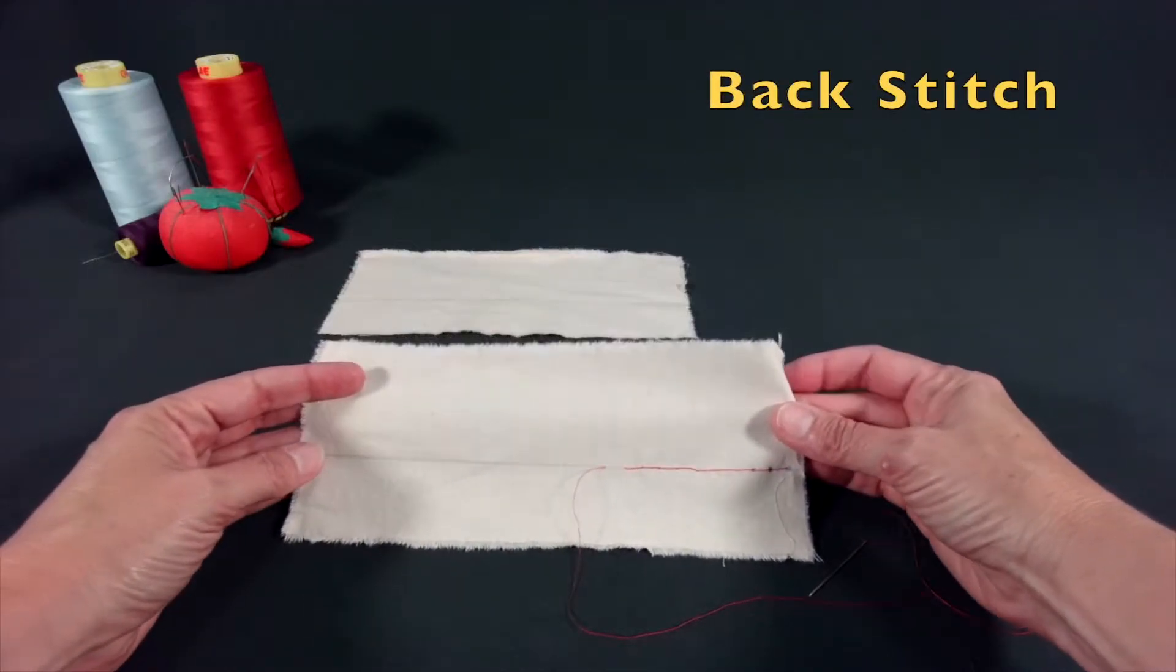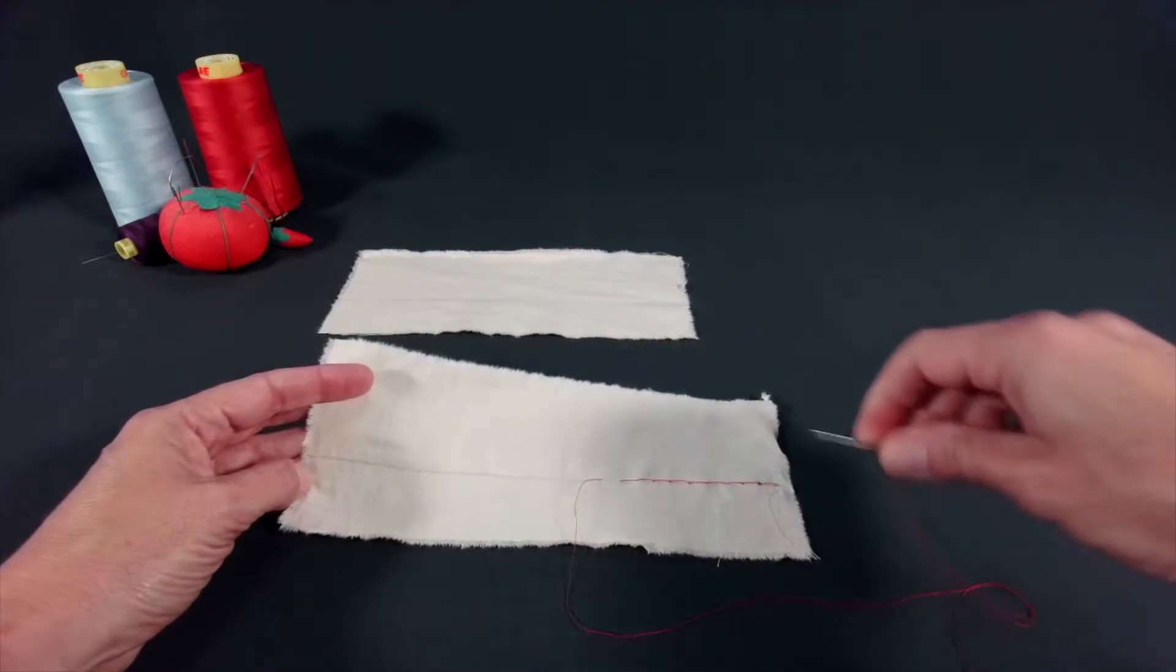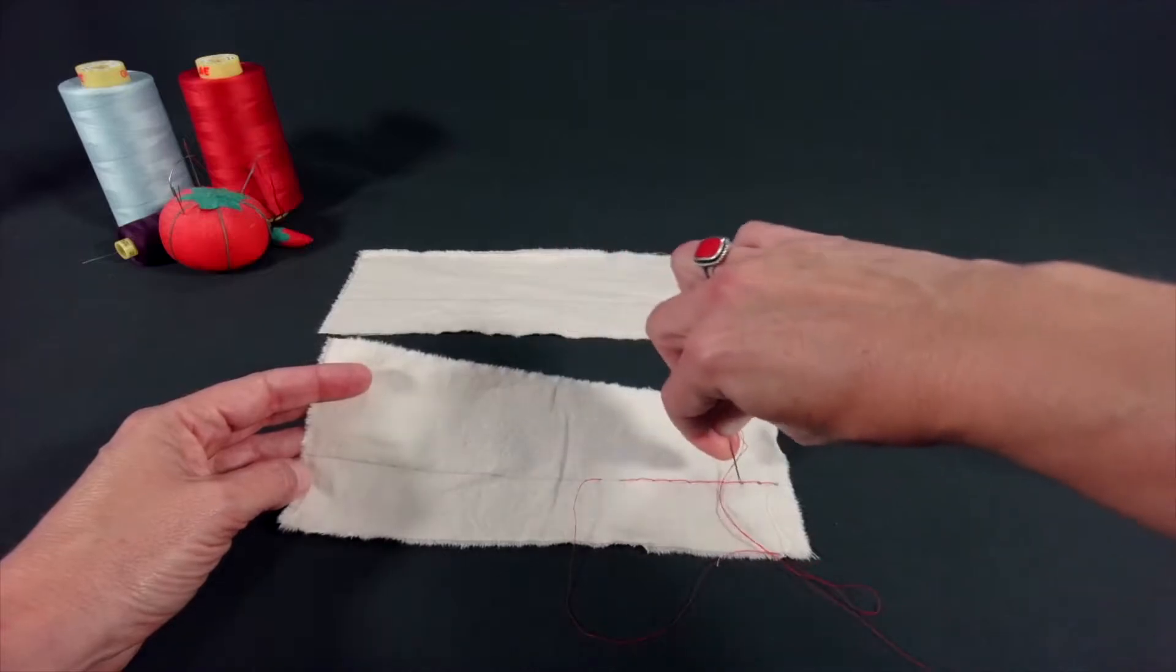This is a demonstration of the back stitch. It is done on piece number two of your sampler. The back stitch got its name because the stitches are sewn forwards as well as backwards.